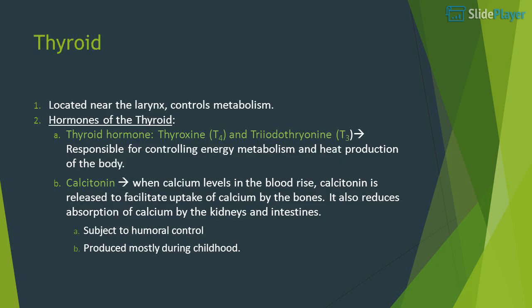Thyroid: located near the larynx, controls metabolism. Hormones: thyroxine (T4) and triiodothyronine (T3) are responsible for controlling energy metabolism and heat production of the body. Calcitonin is released when calcium levels in the blood rise, to facilitate uptake of calcium by the bones. It also reduces absorption of calcium by the kidneys and intestines, and is subject to humoral control, produced mostly during childhood.